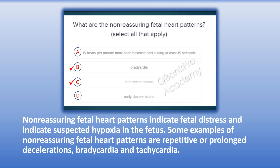The correct answers are B. Bradycardia and C. Late decelerations. Explanation: Non-reassuring fetal heart patterns indicate fetal distress and suspected hypoxia in the fetus. Some examples of non-reassuring fetal heart patterns are repetitive or prolonged decelerations, bradycardia, and tachycardia.